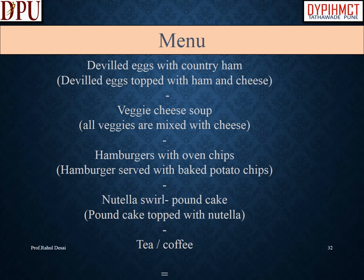Menu 1: Deviled eggs with country ham — deviled eggs topped with ham and cheese. Veggie cheese soup — all veggies mixed with cheese. Hamburgers with oven chips — hamburger served with baked potato chips. Nutella swirl pound cake — pound cake topped with Nutella. Tea or coffee.